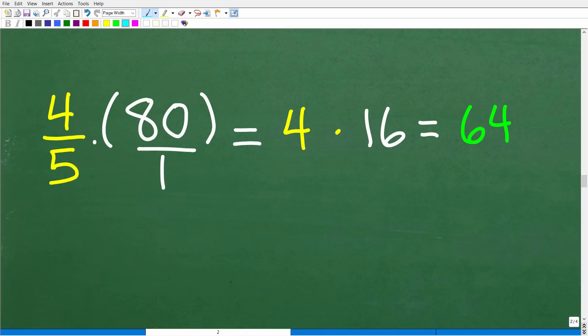4 fifths times 80 or 80 over 1. When you're multiplying fractions, you could just multiply the numerators and denominators. For example, if I had 2 thirds times 1 fifths, the correct answer would be 2 times 1 is 2, 3 times 5 is 15. That is the correct answer. But you always want to look for opportunities to cross cancel.